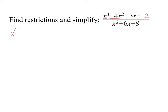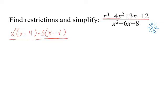For the first group, factor out an x squared. When you pull out an x squared, you're left with x minus 4. For the second group, pull out a 3, giving plus 3 times x minus 4 again. That is the numerator. For the denominator, use the X method: 8 on top, negative 6 on bottom, sides are negative 4 and negative 2. So the denominator factors as (x minus 4)(x minus 2).